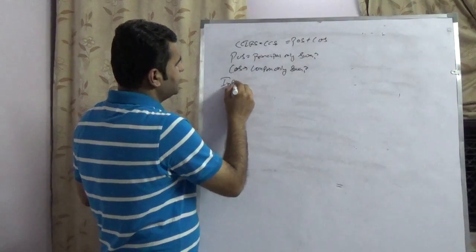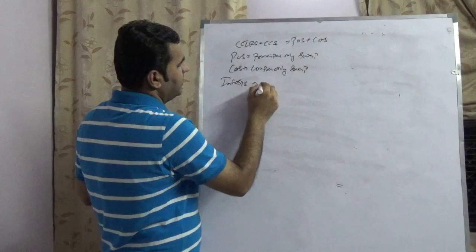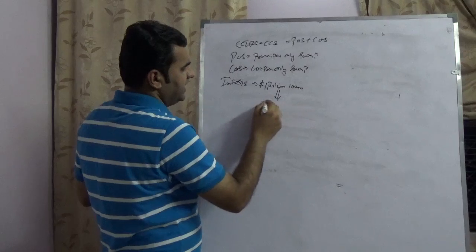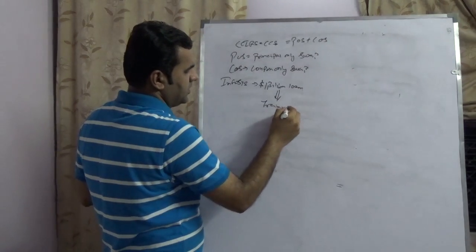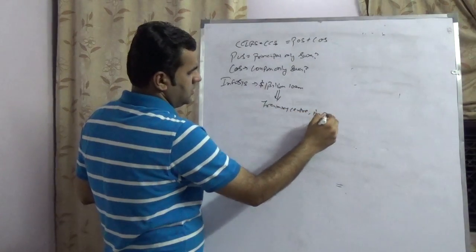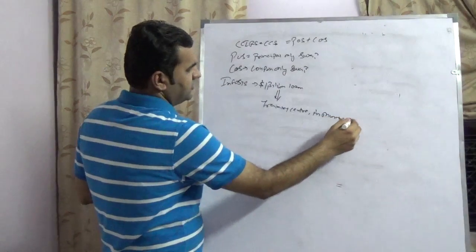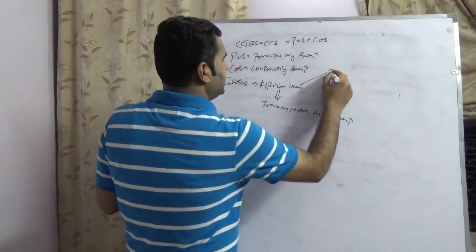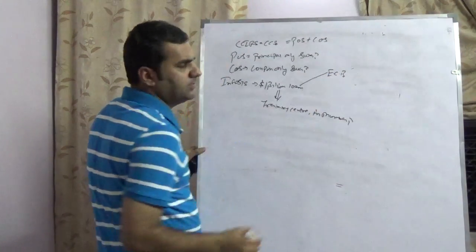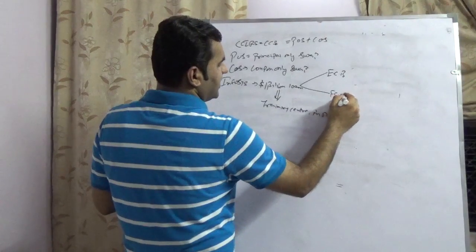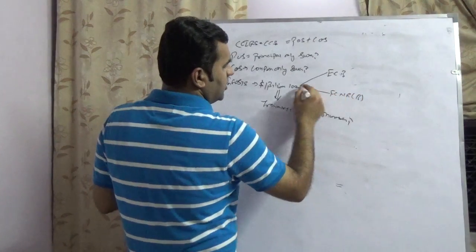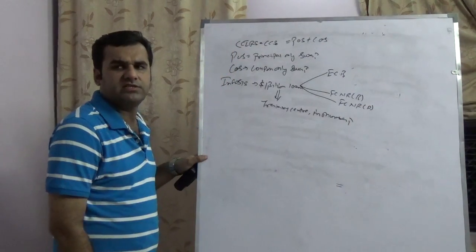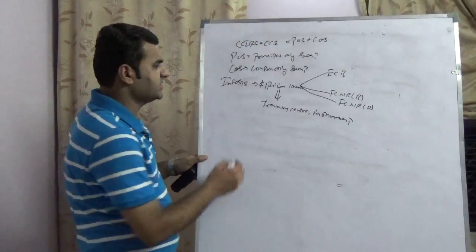Take a very simple example: Infosys would like to take a one billion dollar loan to build a training center in Mumbai. There are two ways Infosys can take this loan — one is ECB, which is external commercial borrowing, and the second is through foreign currency non-resident bonds or foreign currency non-resident deposits. Today we will cover the ECB example.